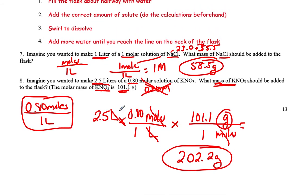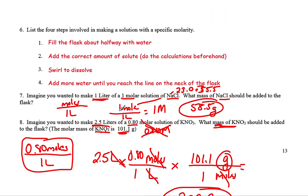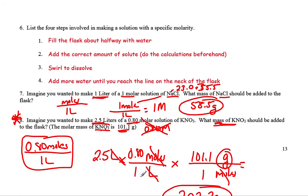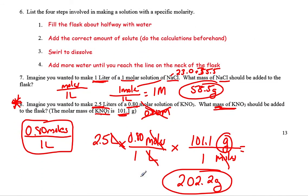So earlier, when we were talking about making a solution with a specific molarity, you would fill the flask about halfway with water. You'd add your correct amount of solute. And this is the math that you would have to do. You'd have to say, how much do I want to make? What's my molarity going to be? And then what's that mass that I want to add? So if I was doing this, I would add 202 grams right now. I would swirl it to dissolve it. And then I would keep adding water until I get to that two and a half liter line.